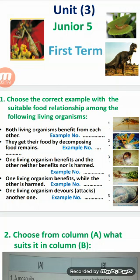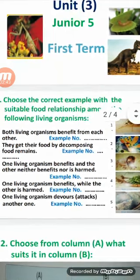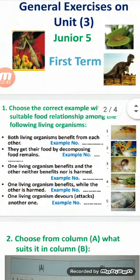Third type — one living organism benefits and the other neither benefits nor is harmed. This relation is called commensalism, which is one type of symbiosis. Its example will be number 2: sponge and tiny aquatic living organisms, because tiny aquatic living organisms get food and shelter from canals found inside the sponge.